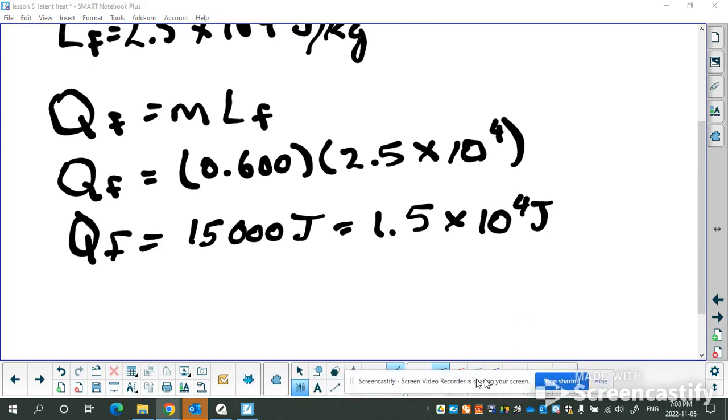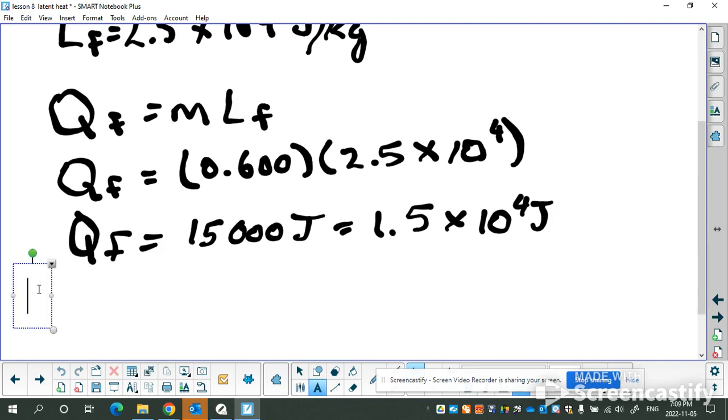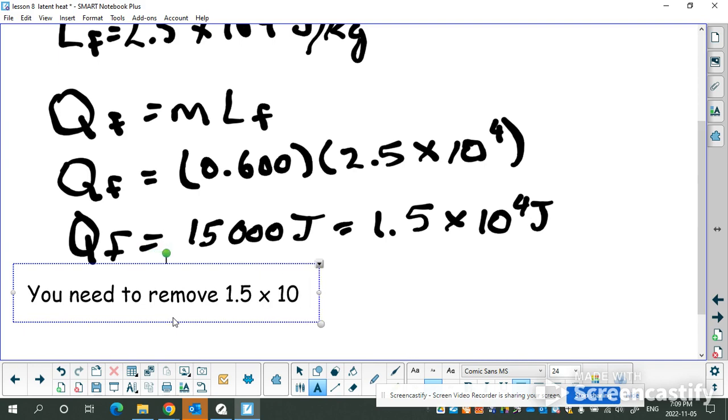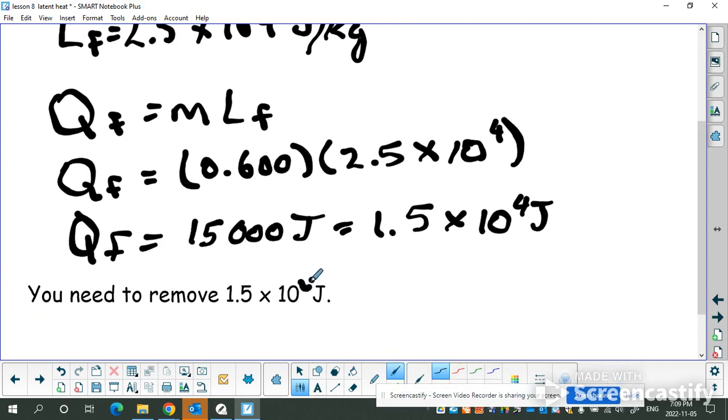Now sometimes it can be very confusing, right? What do I write in my units? But remember, Q is a type of energy. Since it's a type of energy, we automatically know that because it's a type of energy, it's in joules. Every type of energy is in joules. So I would say you need to remove 1.5 times 10 to the four joules of energy for that to happen. So that's the answer. This is the first kind of question we have. This is just how much energy it takes to make it change state.